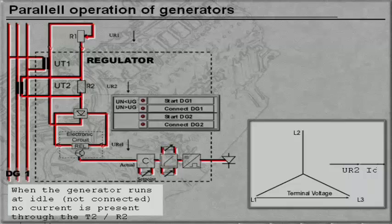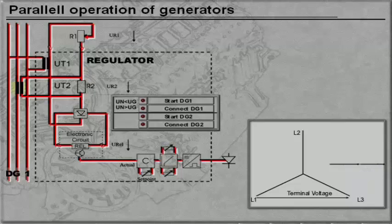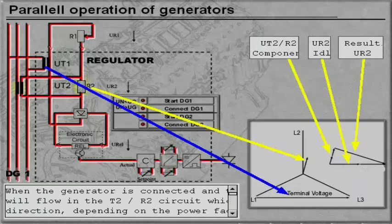When the generator runs at idle, or not connected, no current is present for the T2R2 circuit. When the generator is loaded, current will flow in the T2R2 circuit, which will have another direction depending on the power factor. For an increasing load, the voltage over R2 will decrease. The voltage drop over REL will increase slightly due to this.